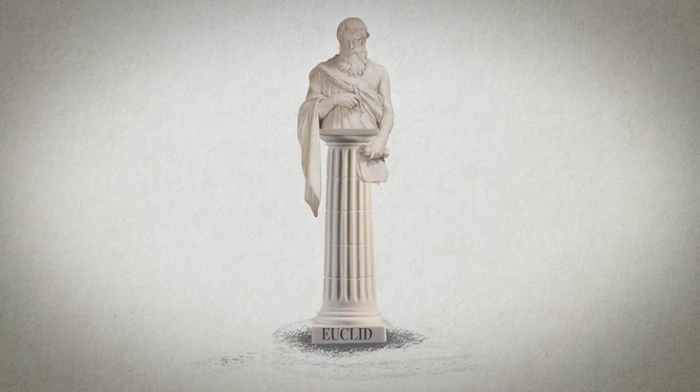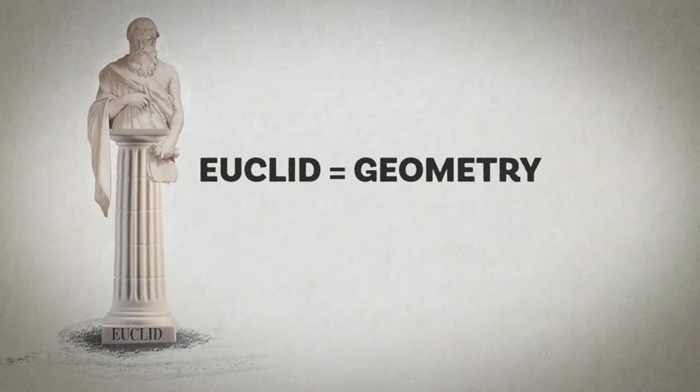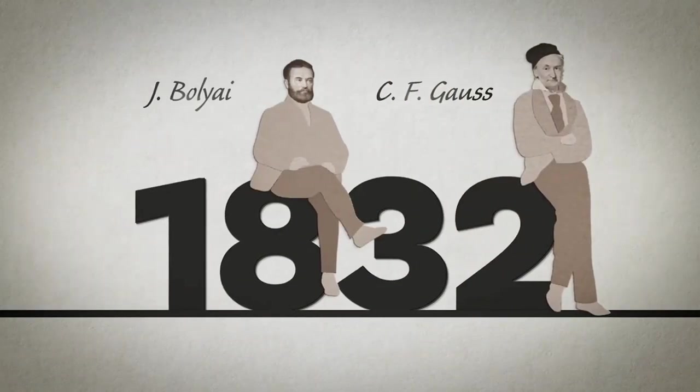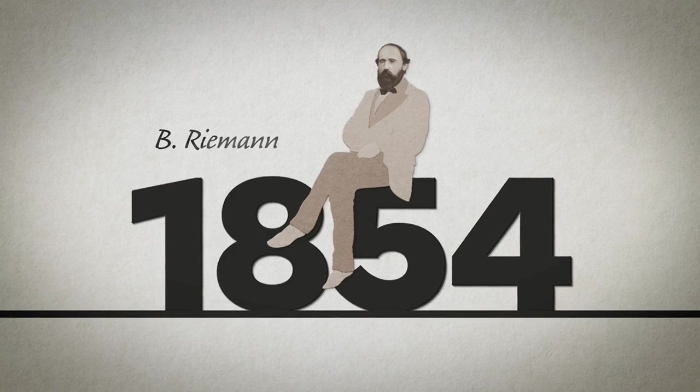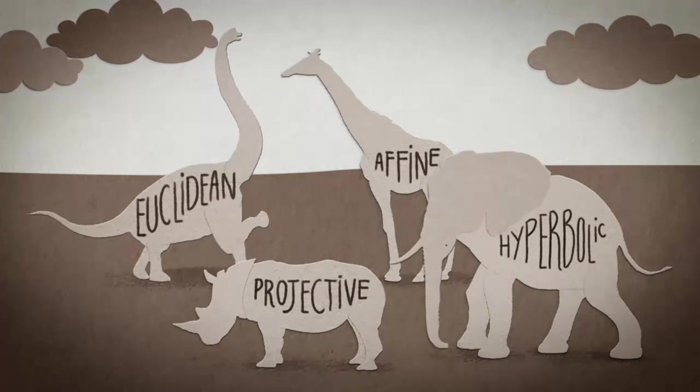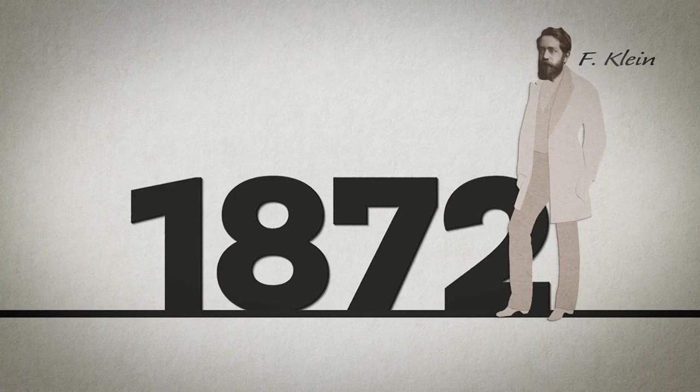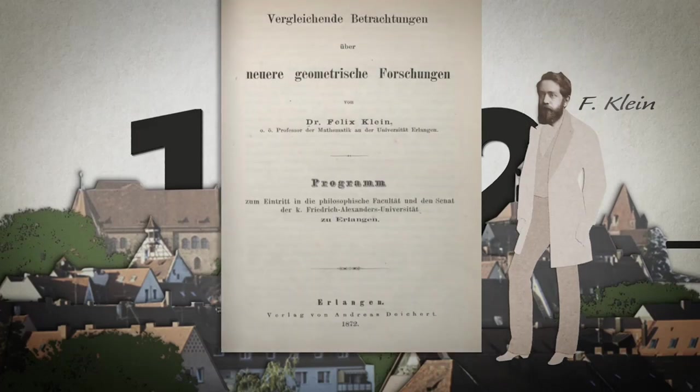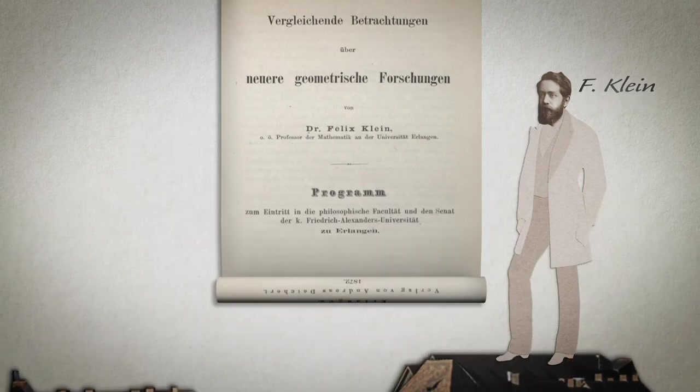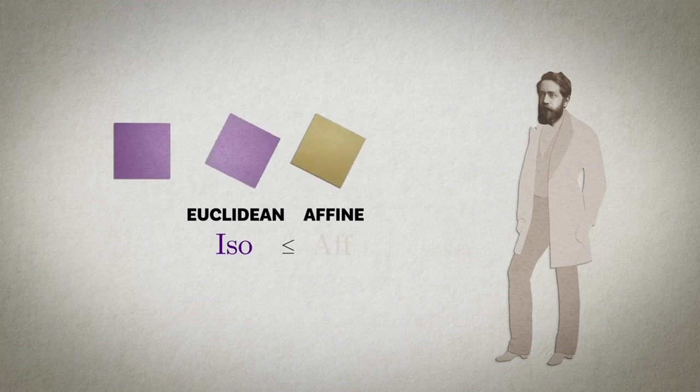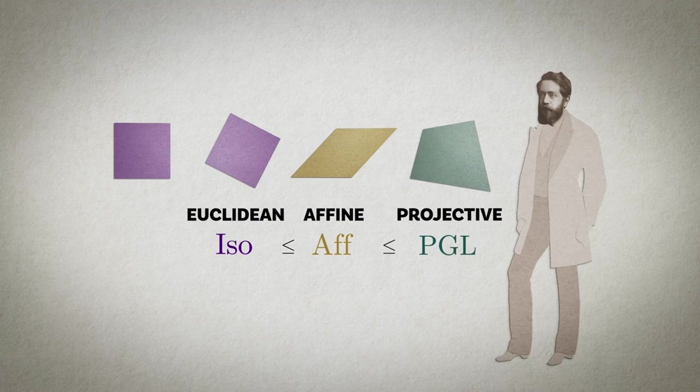For almost 2000 years, the word geometry was synonymous with Euclidean geometry, simply because no other types of geometry existed. Euclid's monopoly came to an end in the 19th century when Lobachevsky, Boyai, Gauss, Riemann and others constructed the first examples of non-Euclidean geometries. Together with the development of projective geometry, an entire zoo of different geometries emerged, with mathematicians debating which geometry is the true one and what actually defines a geometry. A way out of this pickle was shown by a young German mathematician Felix Klein.